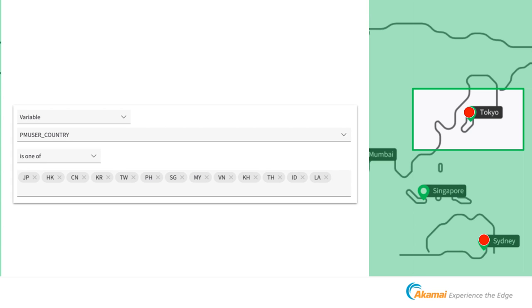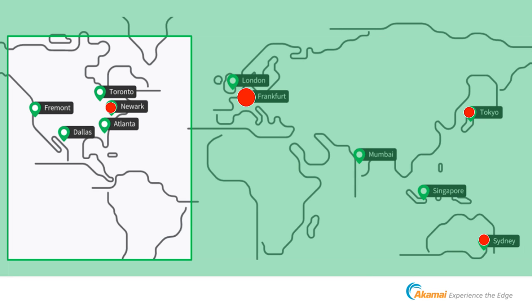But then you ask: what about Singapore, Indonesia — should I send them to Tokyo or to Sydney? It becomes a bit uncertain. If someone is from Japan, sending them to Japan makes sense, but from somewhere in between it's more challenging. Just to keep things simple I went that route. When I decided to also enable the United States, it got more complex.